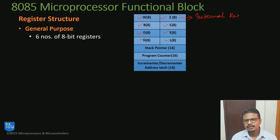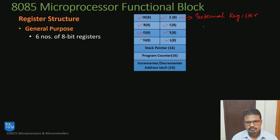W and Z are internal registers, meaning they are used by the microprocessor for internal arithmetic or logical operations. The registers B, C, D, E, H, and L can be grouped as a pair to form a 16-bit register pair.